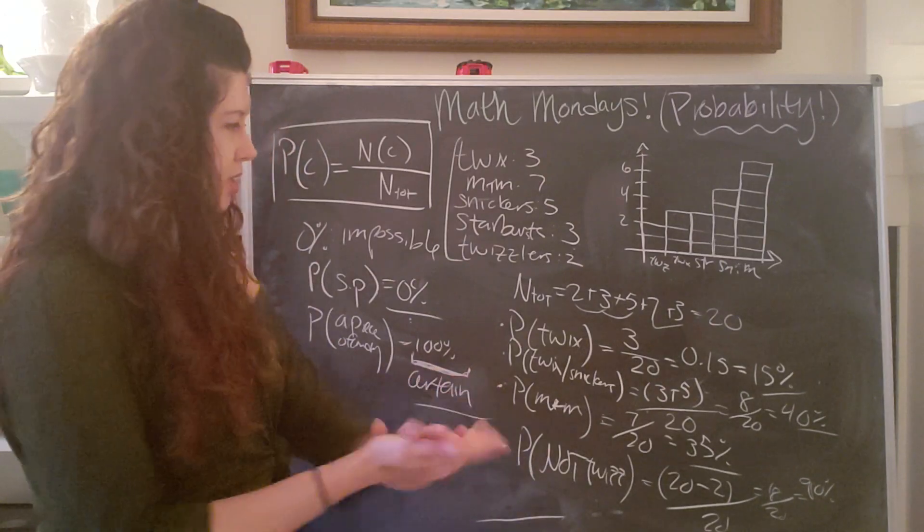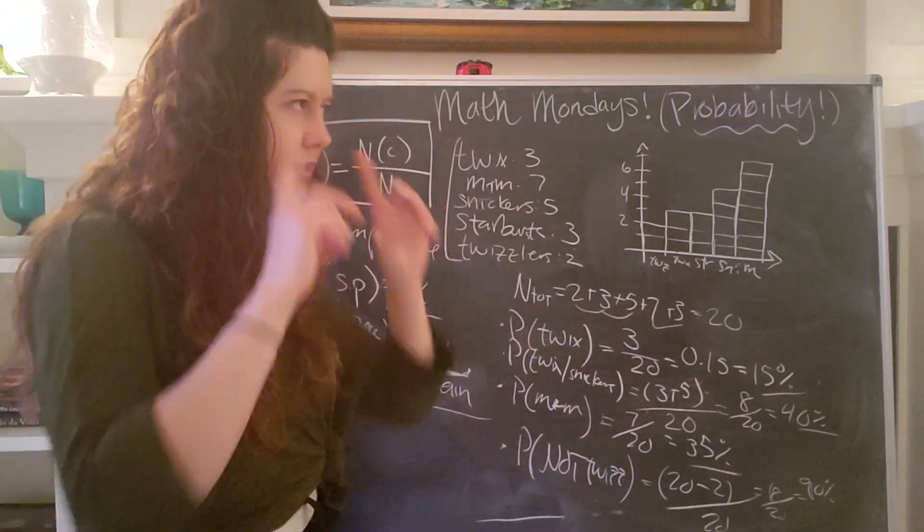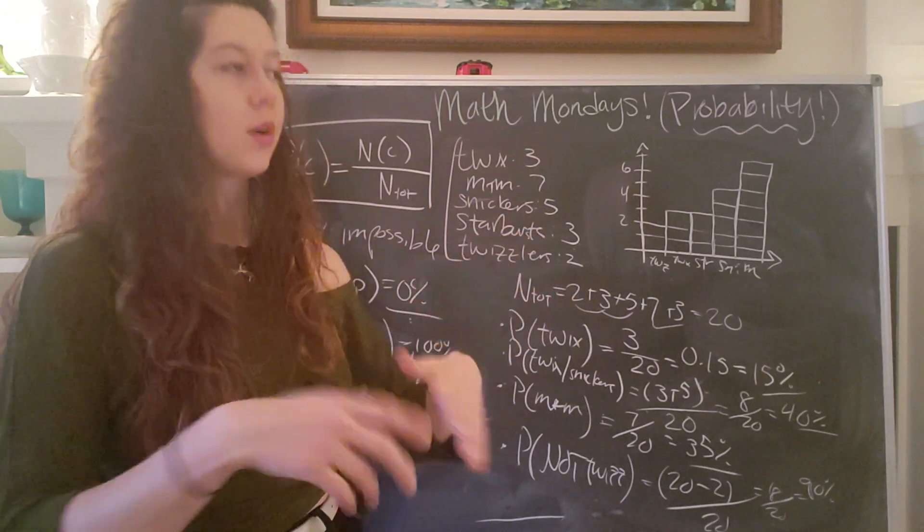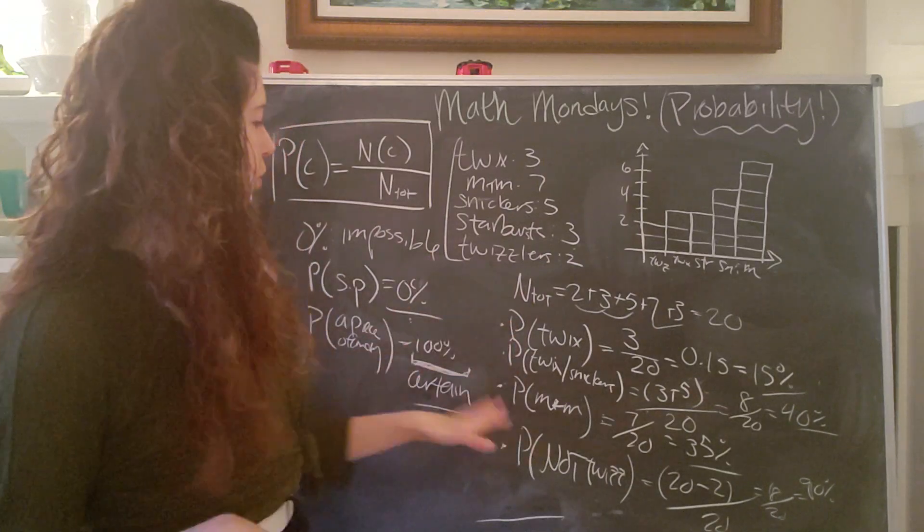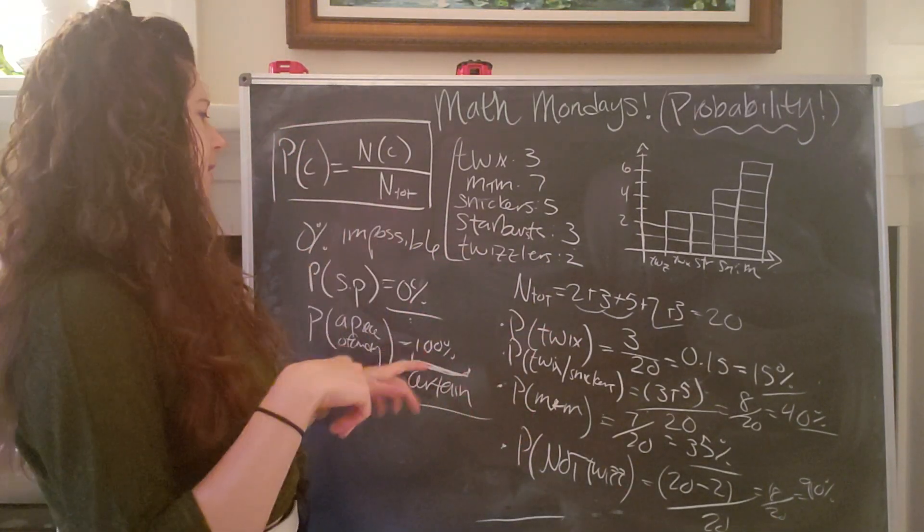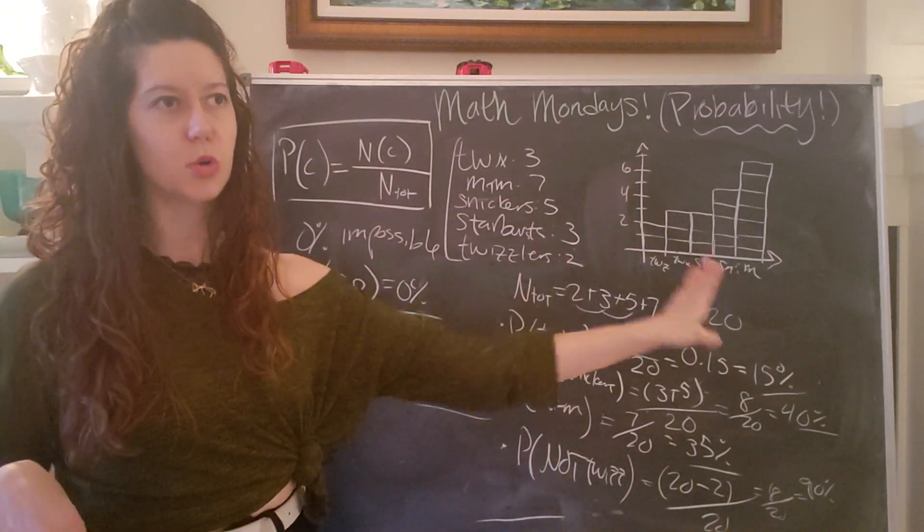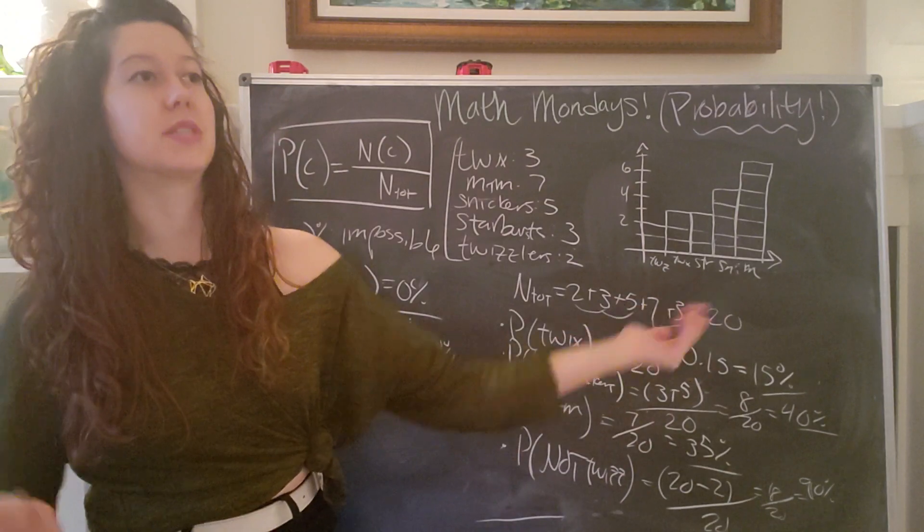So that's why I like percentages, whereas decimals can be a little bit confusing because decimals can also be less than zero and greater than one. But when we think about it in percentages, at least for me, it helps my brain to recognize that, okay, zero percent is impossible and we can't get anything less than zero percent. We can't have anything less than impossible.